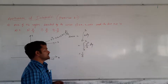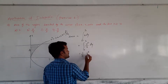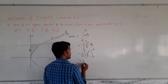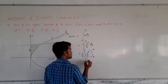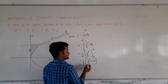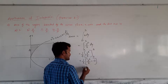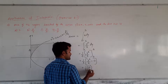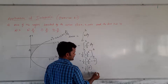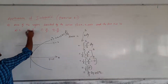From y² = 4x, x = y²/4. So area = integral from 0 to 3 of (y²/4) dy = (1/4) · [y³/3] from 0 to 3 = (1/4) · (27/3 − 0) = (1/4) · 9 = 9/4 square units. Option B is correct.